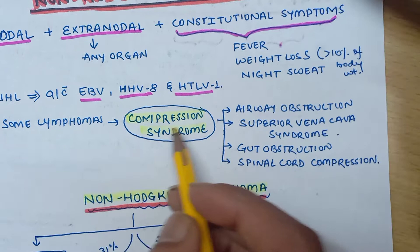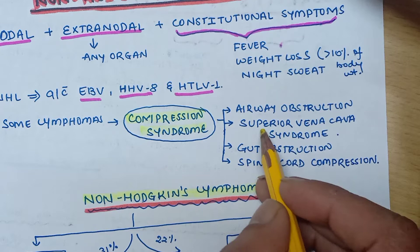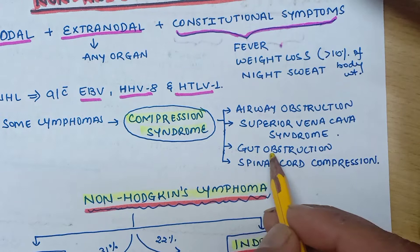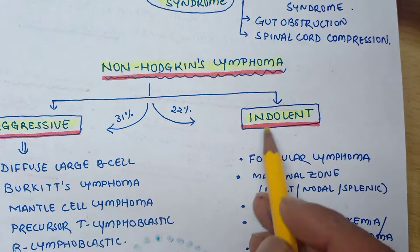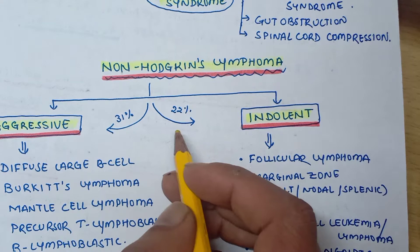Some lymphomas can cause compression syndromes: they can compress the airway causing airway obstruction, compress the superior vena cava resulting in superior vena cava syndrome, cause gut obstruction, and cause spinal cord compression. Non-Hodgkin's Lymphoma can be aggressive or have an indolent course.